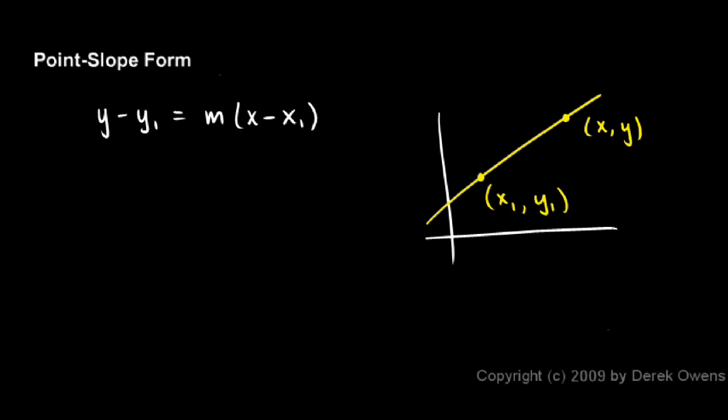we have a rise and a run. If you draw in these lines indicating how far up you go from one point to another, and how far over you go, you can see that the rise here has to be y minus y1, the difference in the y coordinates.